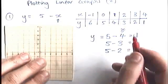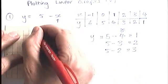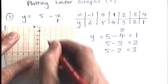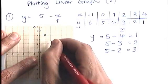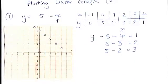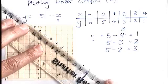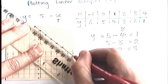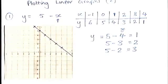So now we go ahead and plot these numbers. We're going to start with minus 1, 6, which is there, 0, 5, 1, 4, 2, 3, 3, 2, and 4, 1. And you can see that that's our straight line. It's going diagonally down like this. I'll just draw a nice straight line through there, all the way across the grid, and I've done it.